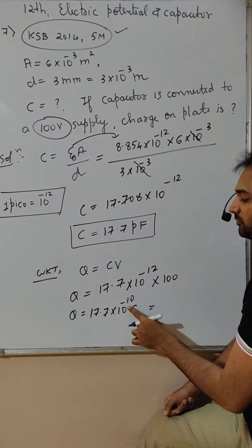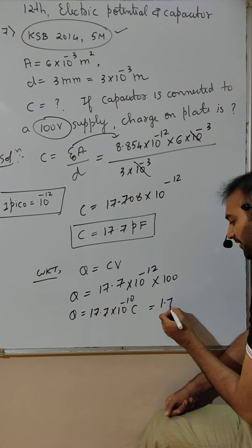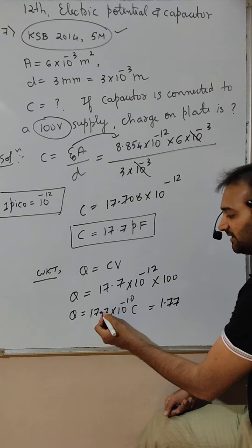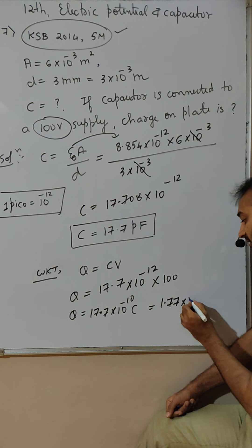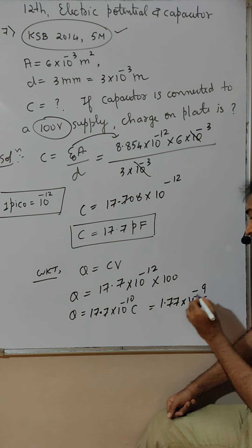17.7 into 10 raised to minus 10 can be written as 1.77. One decimal reduced means this will become 10 raised to minus 9.